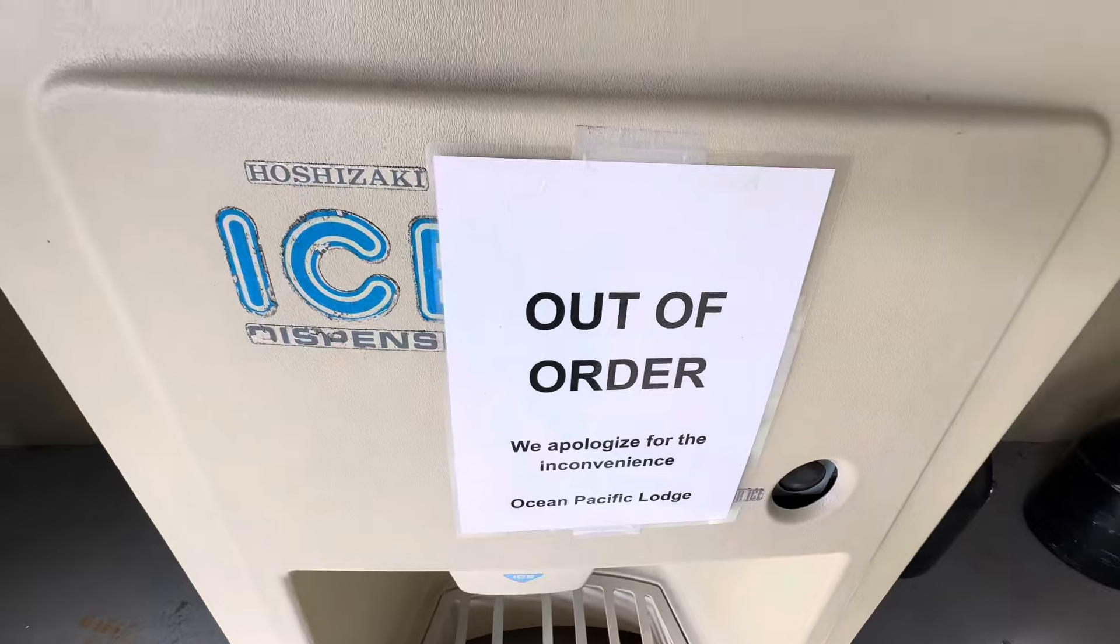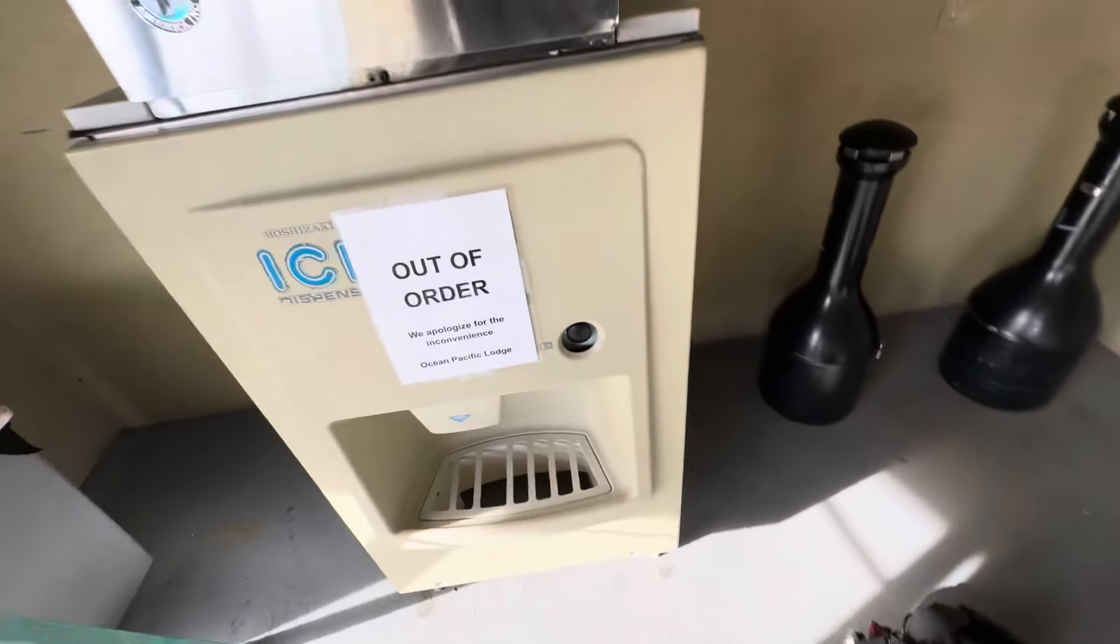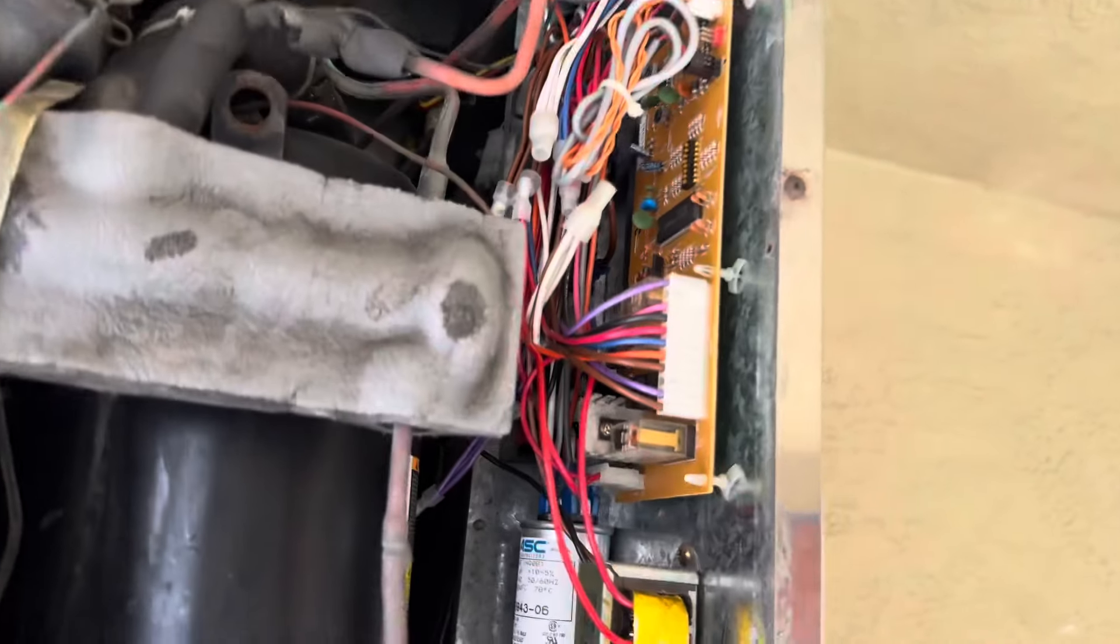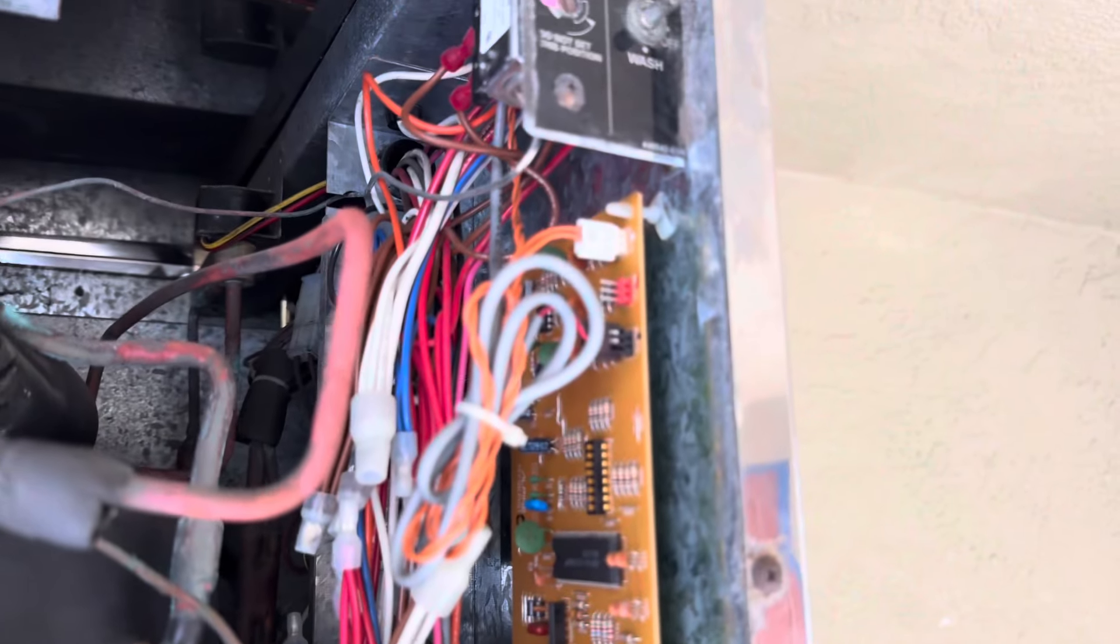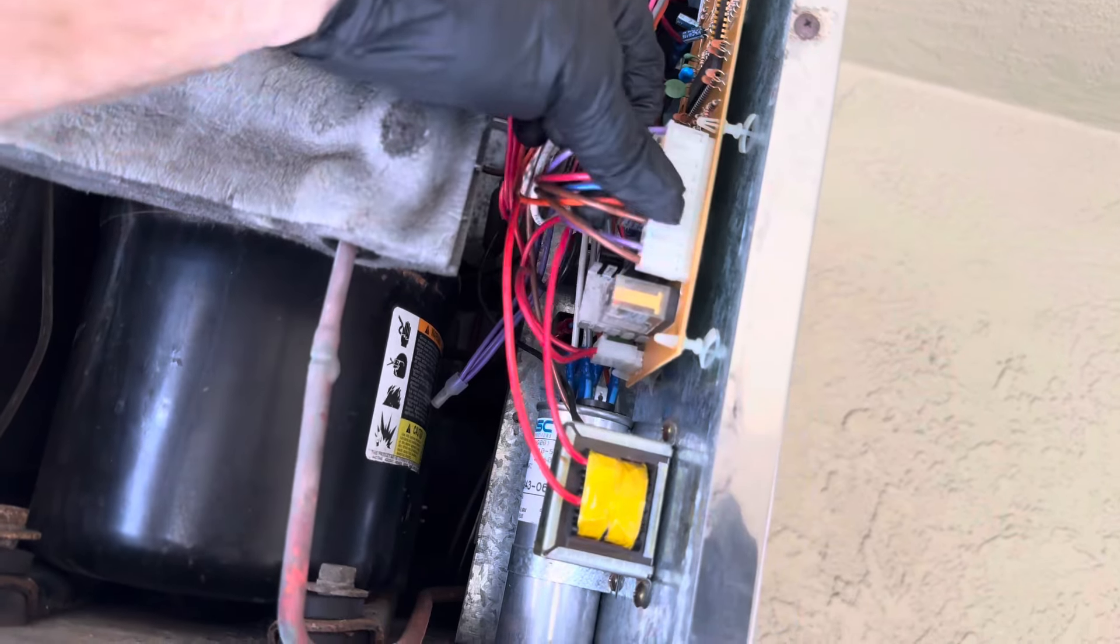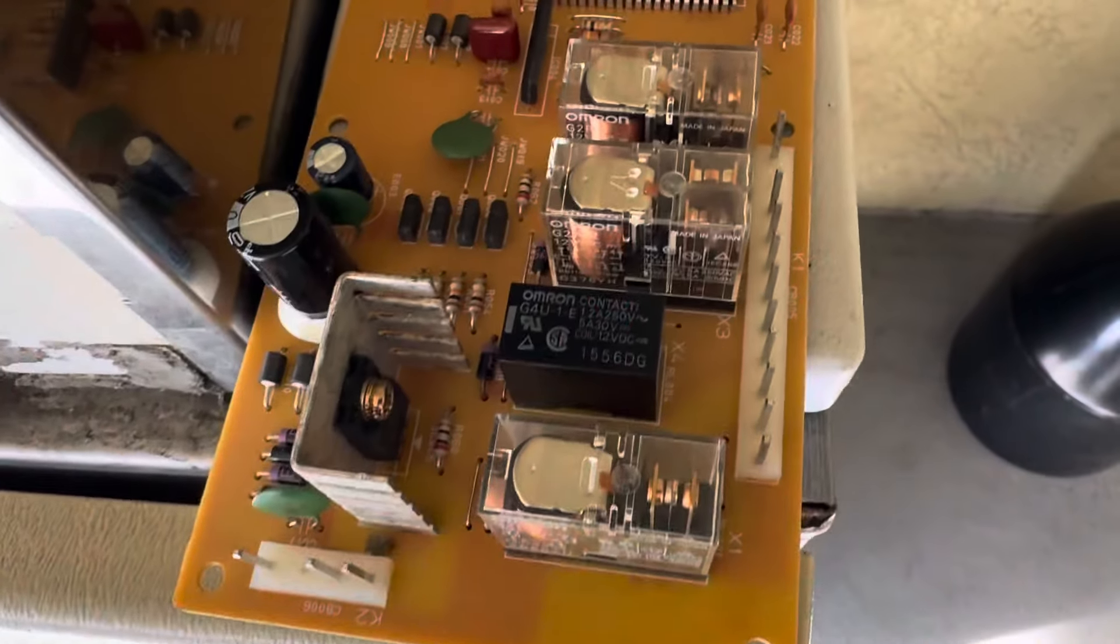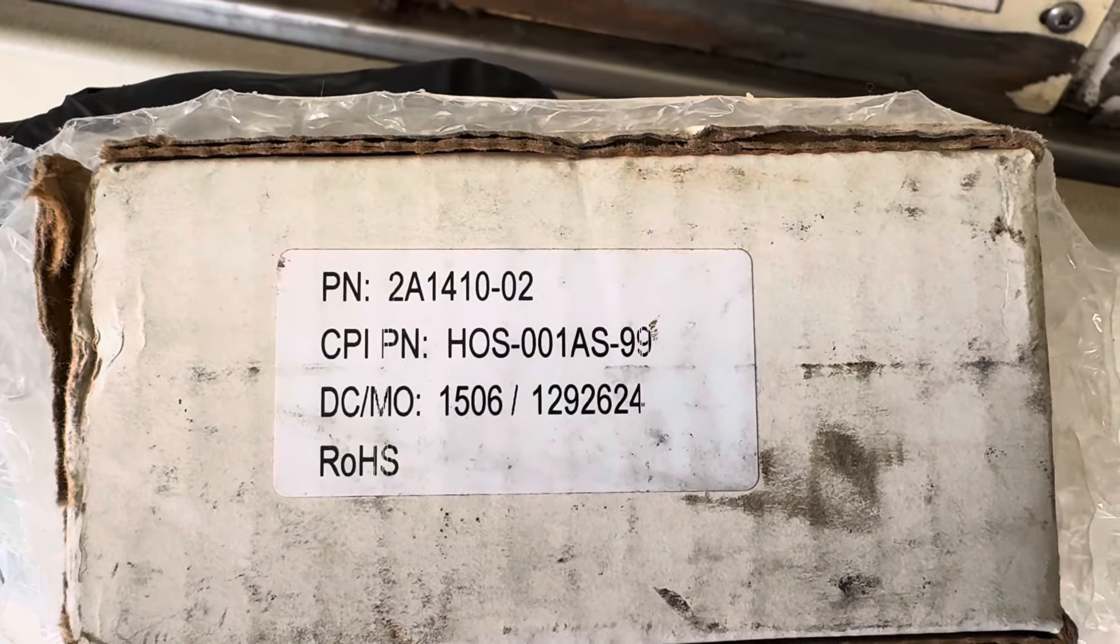There it is. Out of order. Let's unplug it and change this board. It has an old Alpine board. Yeah, it's already unplugged. This is for the dispenser. Yep. Check it out, there it is. There it is, the old Alpine. An Alpine board. Let's see here. Pretty simple. 12 volts. That's it. That's all your connectors. It was such a good design. All right, let's get it out of there. Old Alpine board. And this is the replacement for it, 2A1410-02.